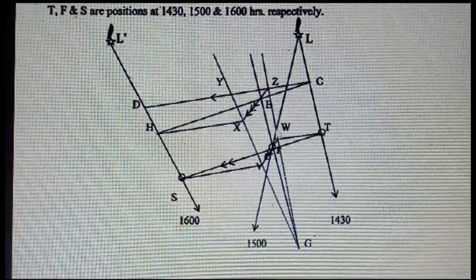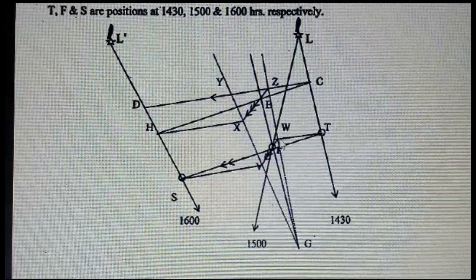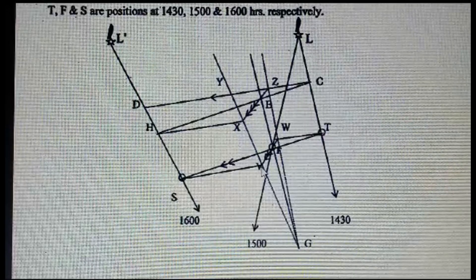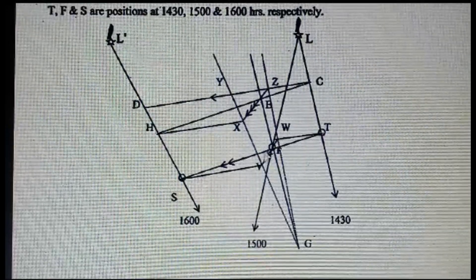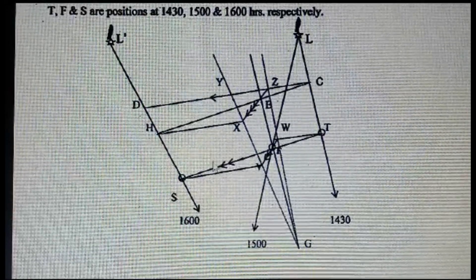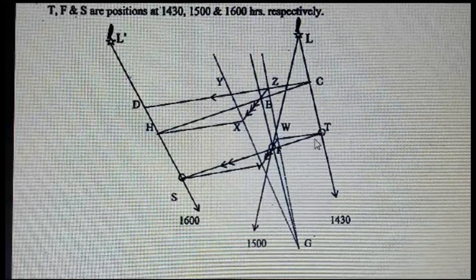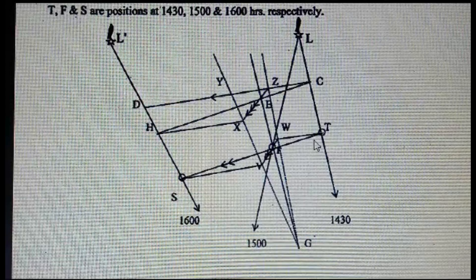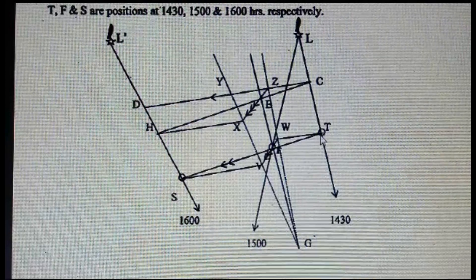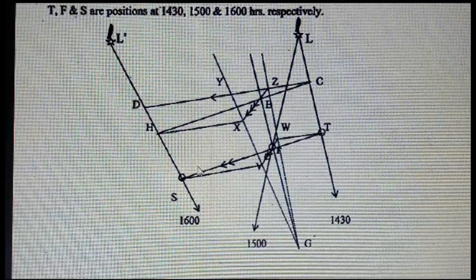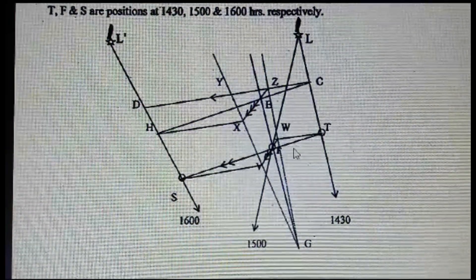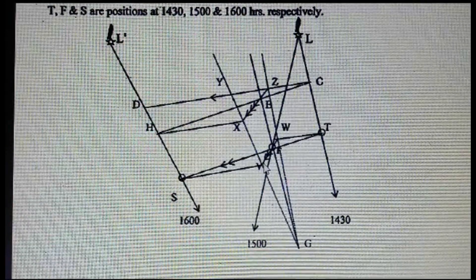Now what you have to do: you have to draw the CTS course to initial. So basically take the parallel and draw it from here, because initial current and the final current you can see. Now the moment you will join S to T, that will be your course made good. You will measure it, you will get your speed made good. Now this current, once you will measure this current,